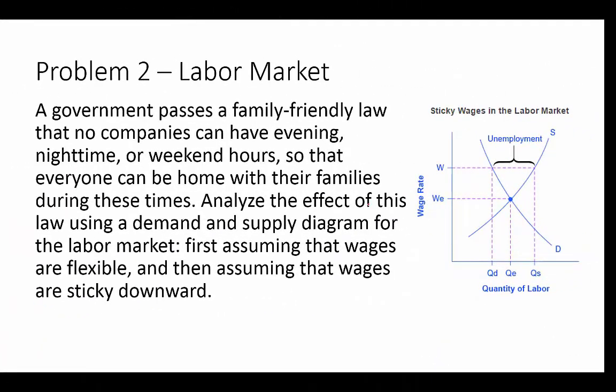Now we're doing Problem 2 about the labor market. These last two problems are what-ifs with graphs you draw and analyze for shifts due to policy or demographic changes. This what-if says: the government passes a family-friendly law that no companies can have evening, nighttime, or weekend hours. We analyze the effect using a demand and supply diagram for the labor market — first assuming flexible wages, then assuming wages are sticky downward.